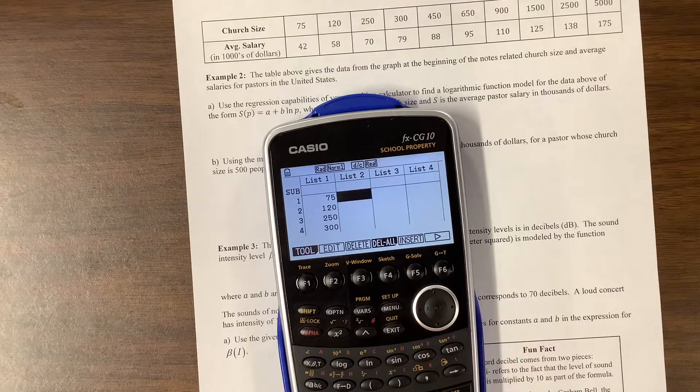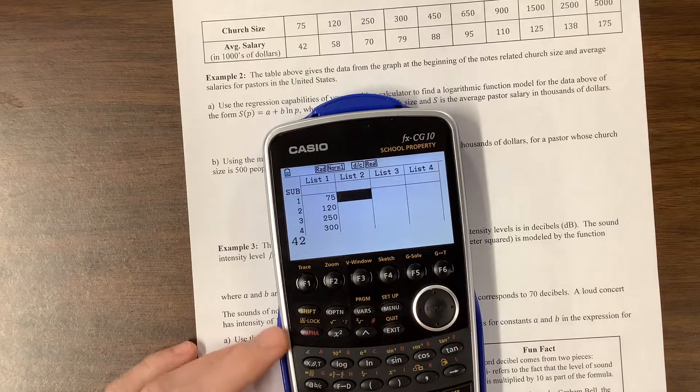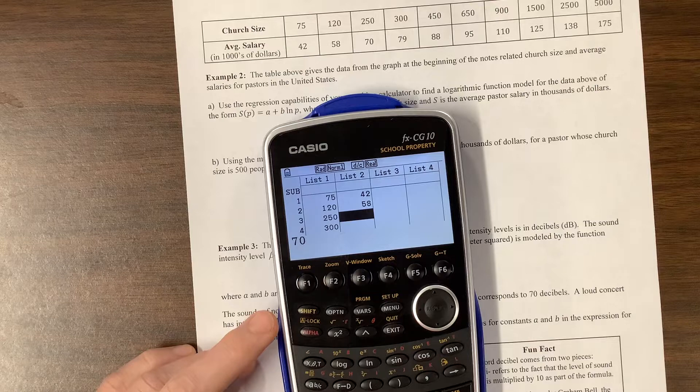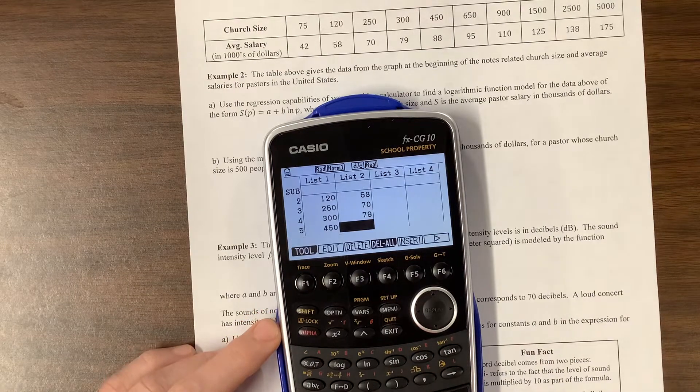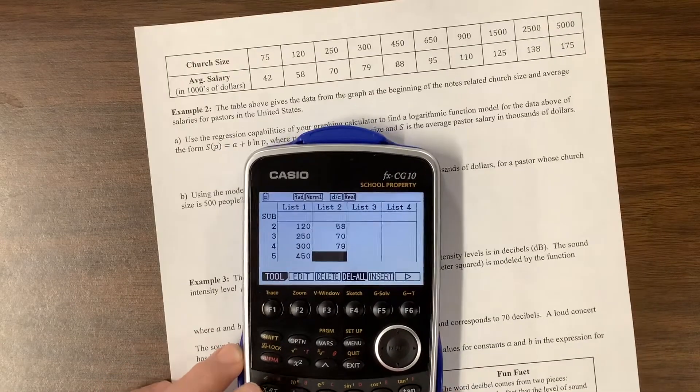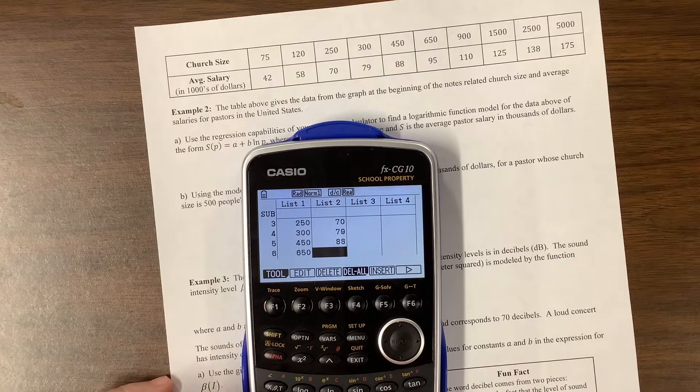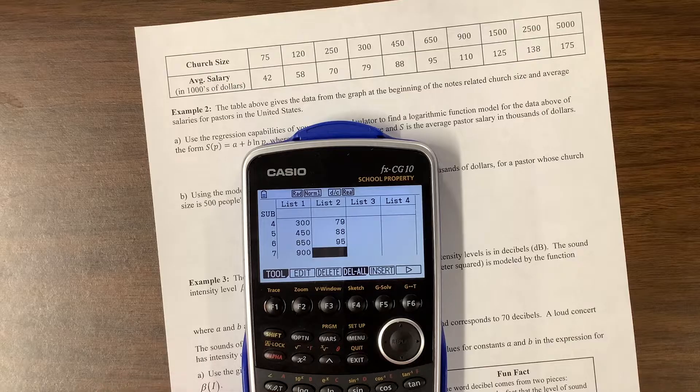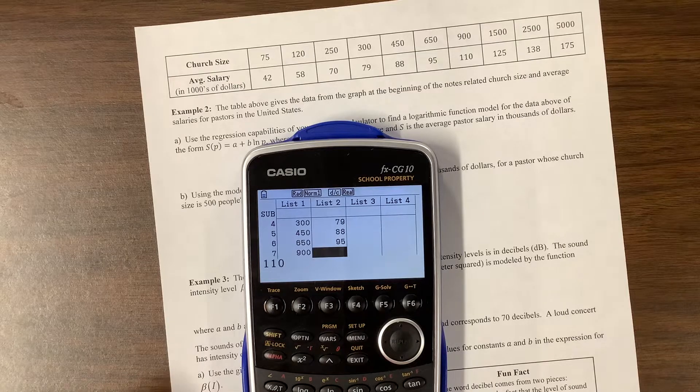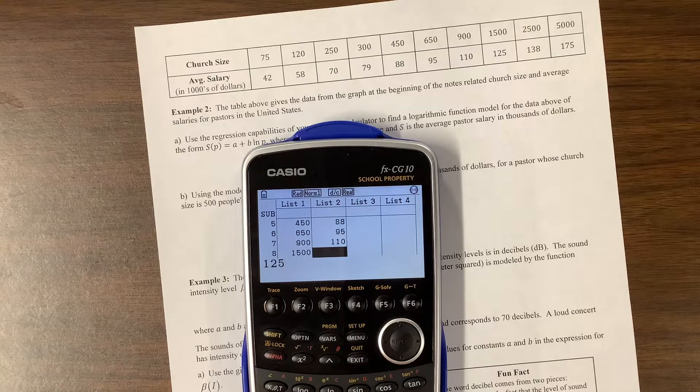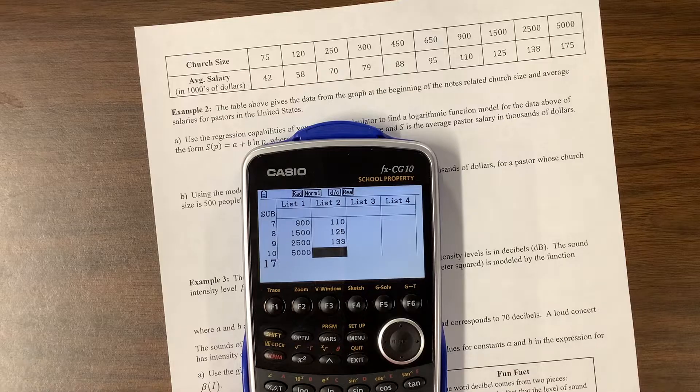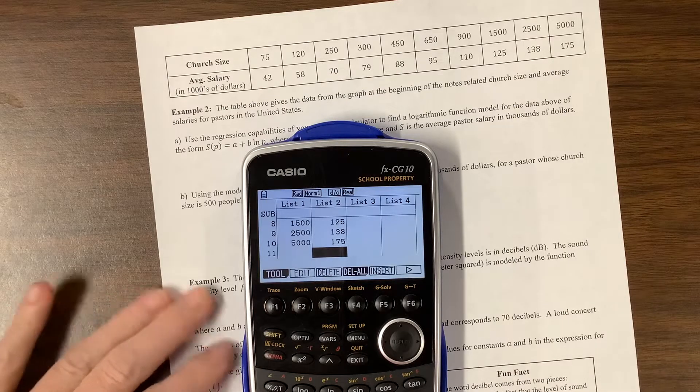There's our first column, I think. We'll find out if I did it wrong. 42, 58. Somebody tell me if I type it in wrong. Can you see both where I'm supposed to go? 450 was 88, and 650 was 95, and 900 was 110, 125, 138, 175. Hopefully I did all that correctly.